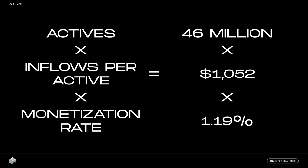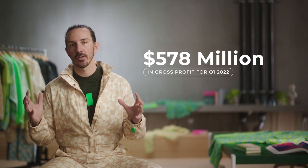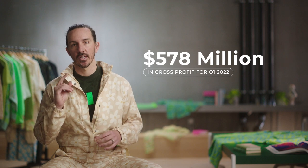Finally, gross profit monetization rate is a function of the fees that we charge and the mix of product usage across the ecosystem. To make this formula more tangible, here's how these top-level drivers contributed to our Q1 results. In March, there were 46 million monthly active accounts that transacted on the Cash App platform. On average, each account brought $1,052 worth of inflows into the ecosystem. In the first quarter, our gross profit monetization rate was 1.19% on these inflows, leading to $578 million worth of gross profit in Q1, excluding contributions from Afterpay.